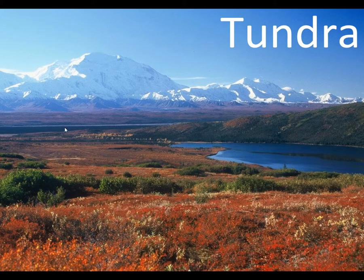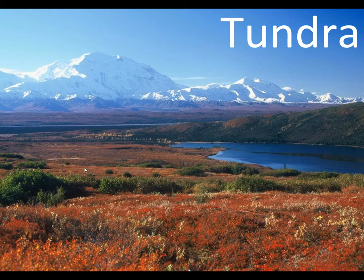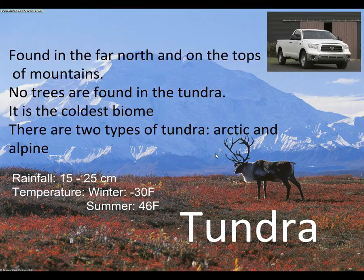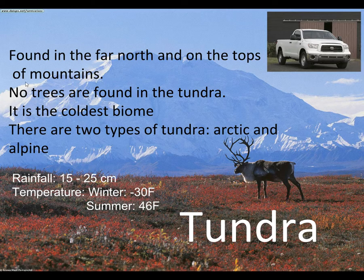All right, let's go ahead and do tundra. If you'll notice in this picture, there are no trees. There's a bunch of bushes and shrubs, maybe, but there are no trees. Let's get into that and figure out why. That's one of the defining characteristics — there are no trees.